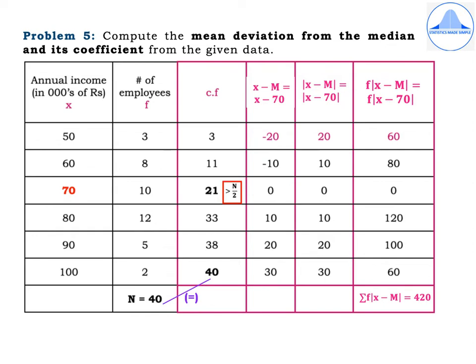Problem 5: compute the mean deviation from the median and its coefficient from the given data. Annual income in thousands of rupees: 50, 60, 70, 80, 90, 100; number of employees: 3, 8, 10, 12, 5, 2. The given data is discrete data. Mark annual income as x, number of employees as f; N = 40. To calculate the median, accumulate the frequencies: 3, 11, 21, 33, 38, 40. The last CF value should match N = 40, confirming calculations are correct.